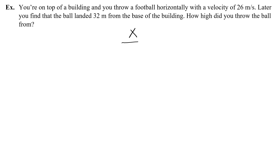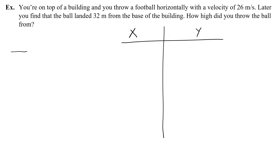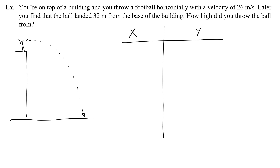Before getting started, I'm going to give myself some room to work with my x and y motion. We're going to have x motion and y motion separated because they are independent from one another. The only variable that goes between x and y is time. Now I'm going to draw a picture of the problem — you are on top of the building, you throw the football horizontally, it falls down and hits the ground 32 meters from the base of the building.